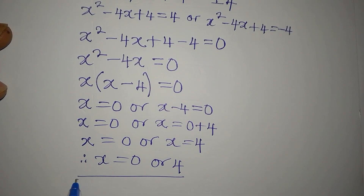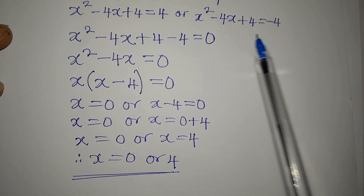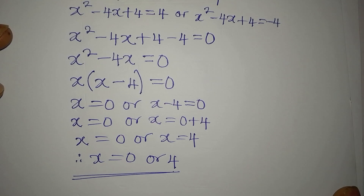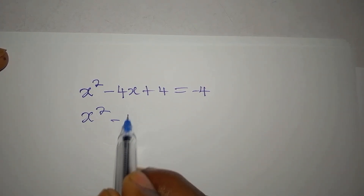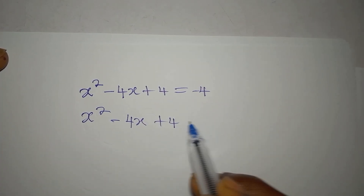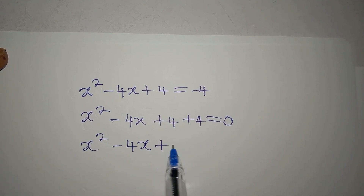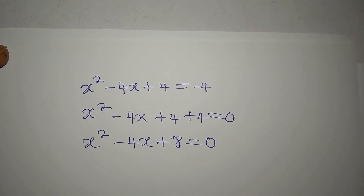That's not the full solution — we still have equation two: x squared minus 4x plus 4 equals minus 4. Bringing the minus 4 to the left (it becomes positive) gives x squared minus 4x plus 4 plus 4 equals 0, so x squared minus 4x plus 8 equals 0.